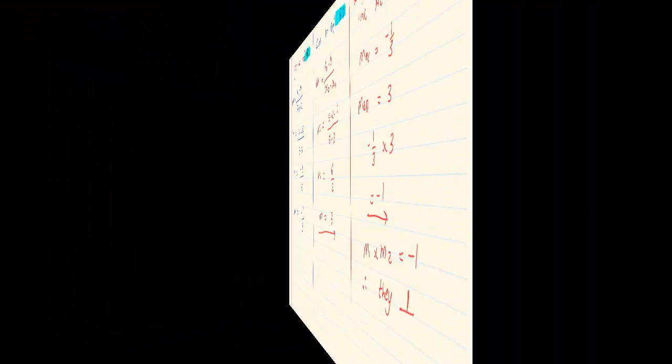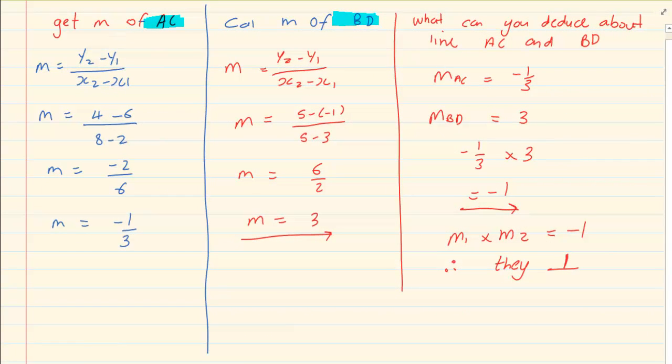The next thing we learned was the gradient. The formula for the gradient is m is equal to y2 minus y1 over x2 minus x1. What we also know is that m1 times m2 is equal to negative 1 would mean that the two lines are perpendicular. They are 90 degrees to each other.